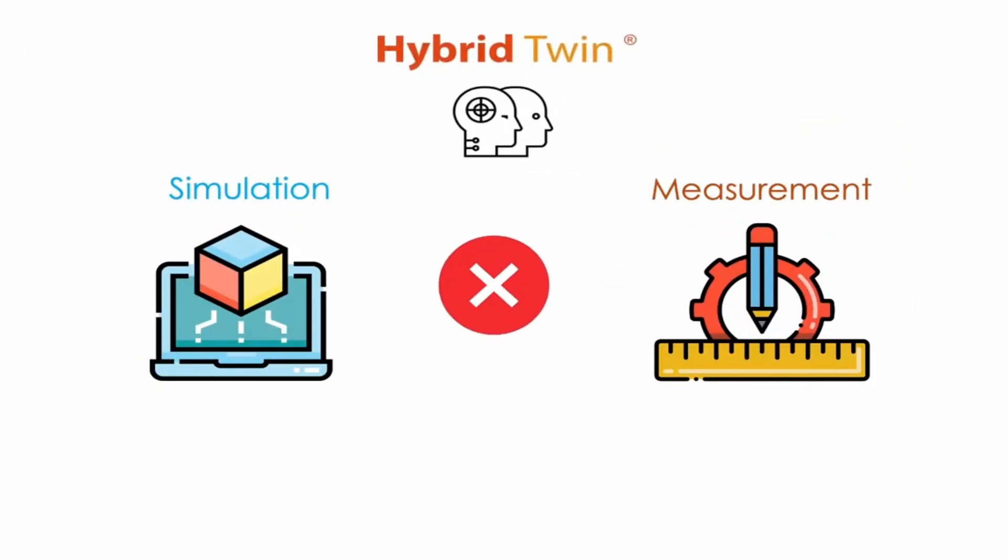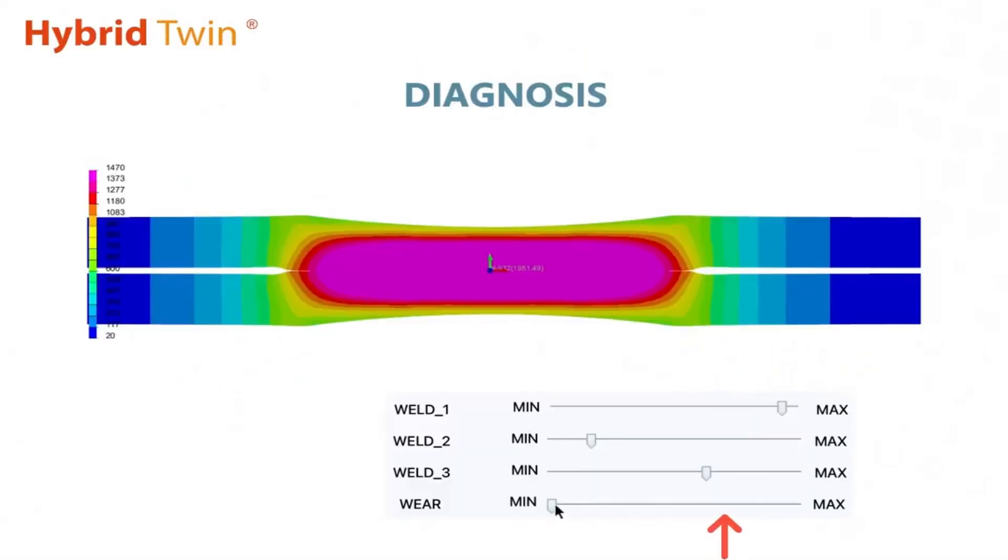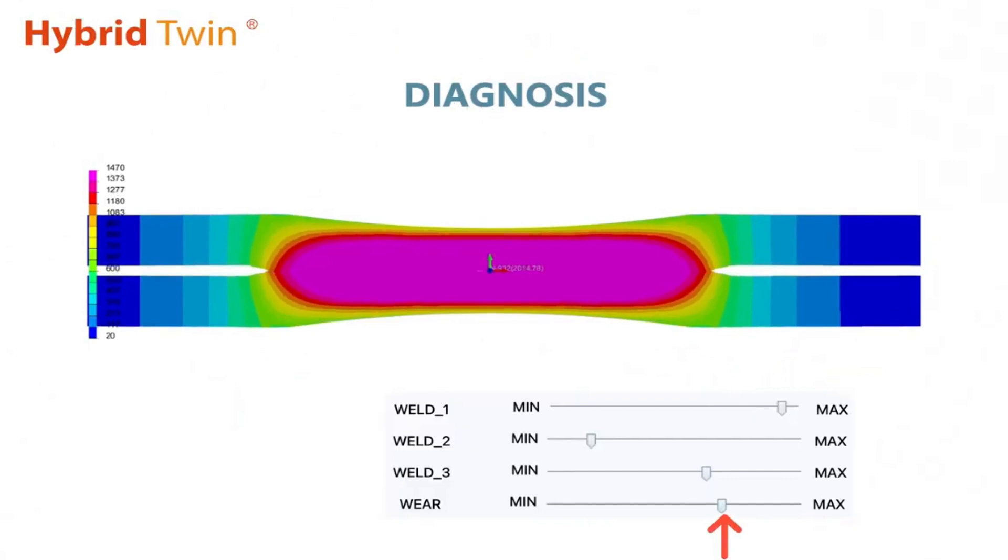Hybrid twin allows to fill the gap between state-of-art models and reality. Thanks to the parametric model, the wear can be quantified fast and accurately and a proper real-time diagnosis established. The new process conditions are updated in real-time to ensure the quality of the spot welds despite the degradation.